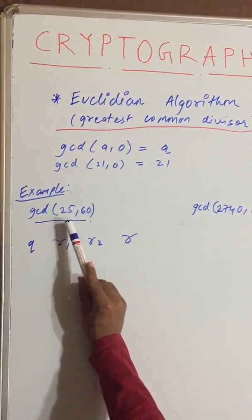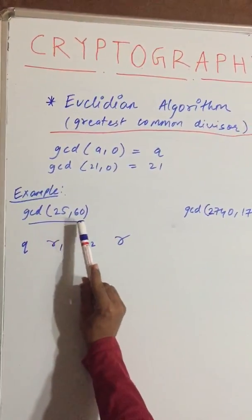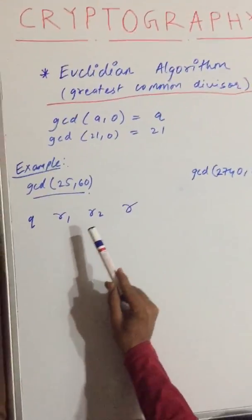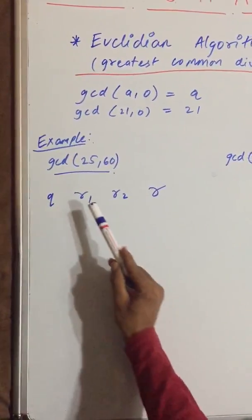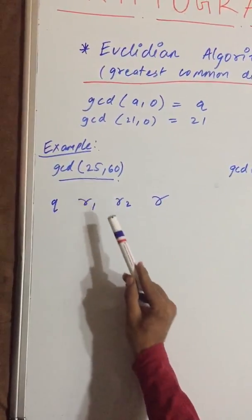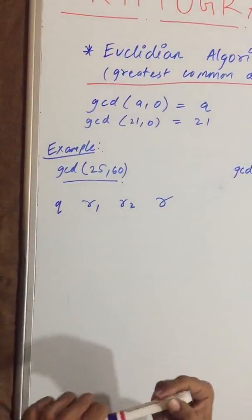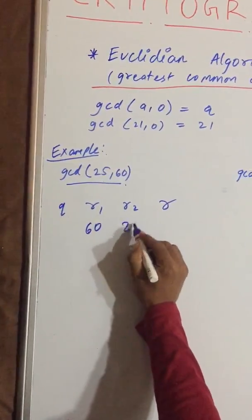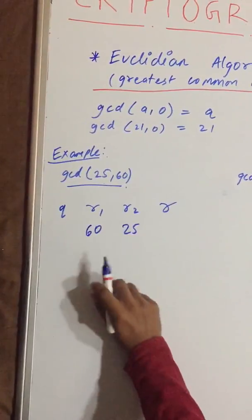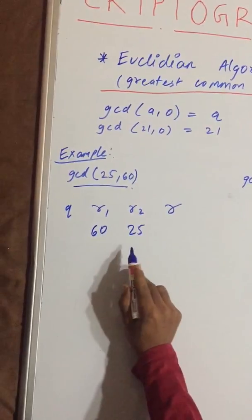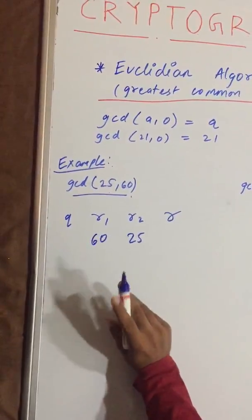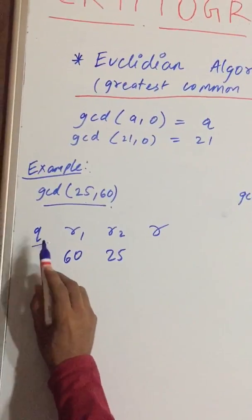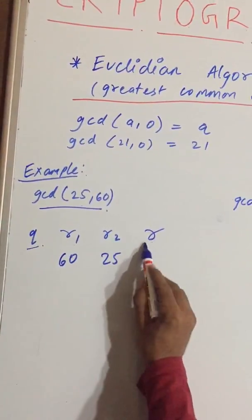Now let's find the GCD of 25 and 60. We set up columns: Q, R1, R2, and R. Here R1 will be any number you can take, and R2 you can take any number. I will be taking R1 as 60 and R2 as 25. Now you have to do some mathematical calculation like division. Q is the quotient and R is the remainder.